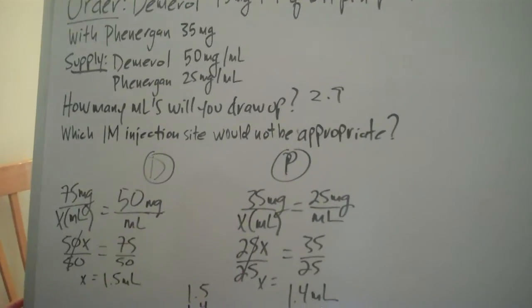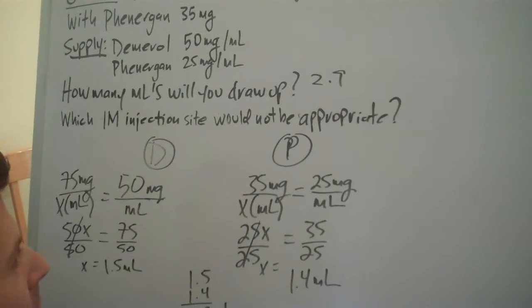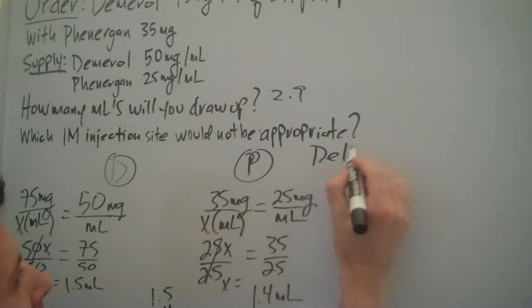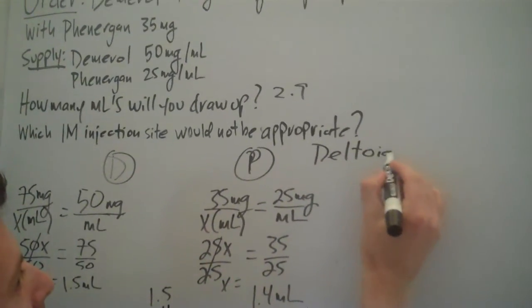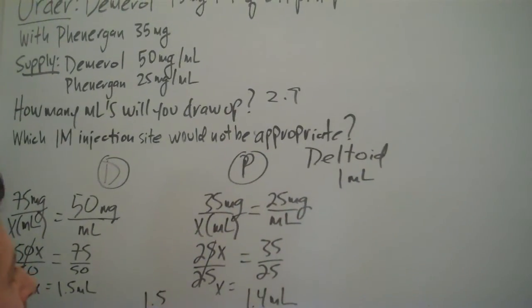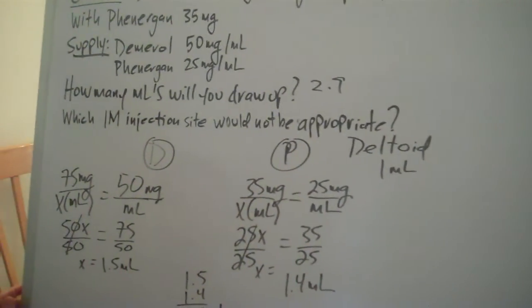And a little bonus question: which IM injection site would not be appropriate? The deltoid. You should only be injecting 1ml in the deltoid. That's our problem.